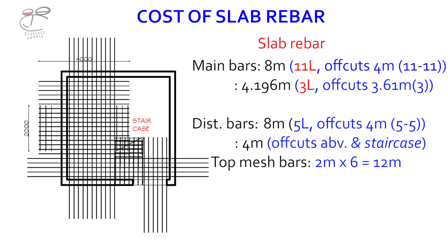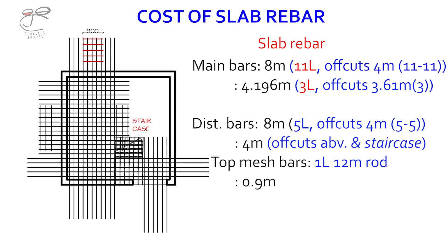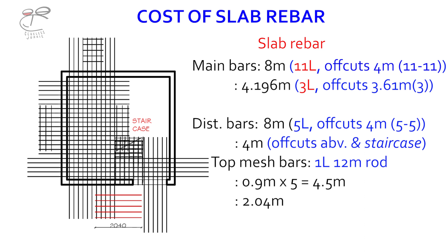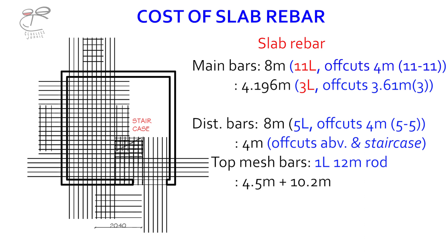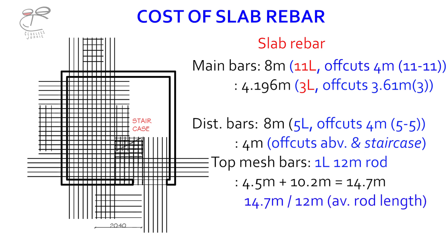To complete the top mesh of that area, we need 0.9-meter bars, and there are 5 units of that. So 0.9 meters multiplied by 5 gives 4.5 meters. Finally, on the side, we'll be needing a 2.04-meter bar to complete the top mesh of that region. So 2.04 multiplied by 5 gives 10.2 meters. Adding 4.5 meters to 10.2 meters gives 14.7 meters.